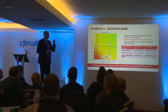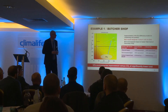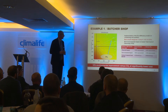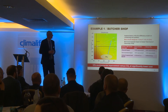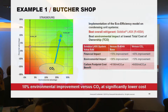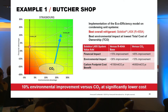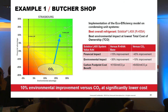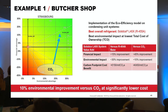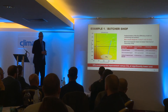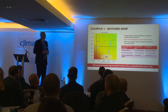I have examples of eco-efficiency simulation for the butcher shop. This is the eco-efficiency score for 455A versus CO2 condensing units. You can see that using 455A we can have approximately 45 percent improvement versus the CO2 system, and 10 percent improvement in terms of environmental impact.